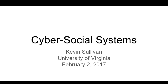He is an associate professor in computer science at the University of Virginia. His PhD in computer science is from the University of Washington, where he worked with David Knottkin on software architecture and evolution. He has worked on issues including modularity and the economic value of flexibility and design, programming language features for aspect-oriented modularity, and formal methods for design space exploration.